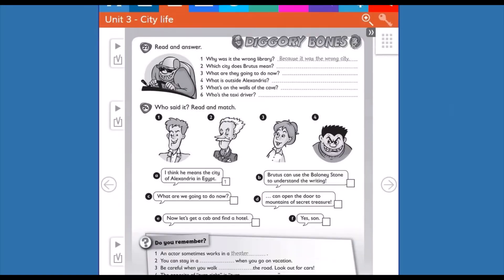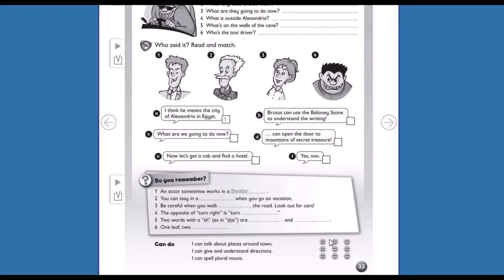Very good. Now in this park, here, in this space, usted va a poner si usted no entendió, no lo puede hacer, si usted so so, más o menos, o si usted sí lo puede hacer. Can do. I can talk about places around town. ¿Usted puede hablar de lugares alrededor de la ciudad? Si no lo puede hacer, encierra acá. Si más o menos, acá. Si sí lo puede hacer, acá.